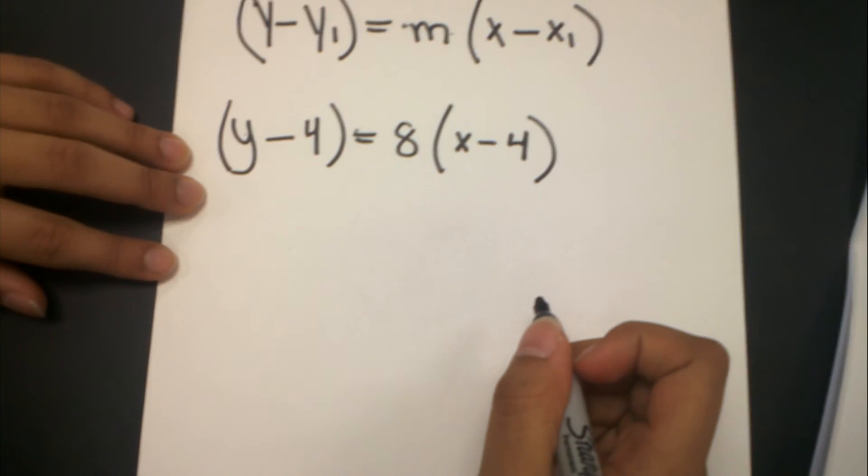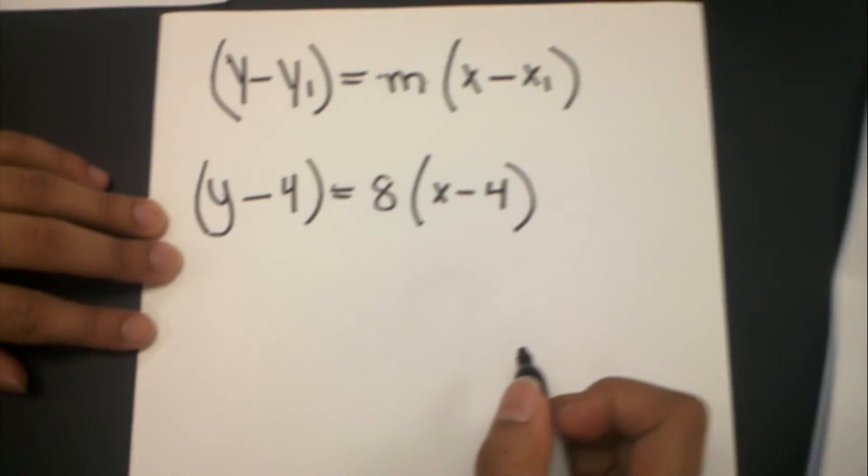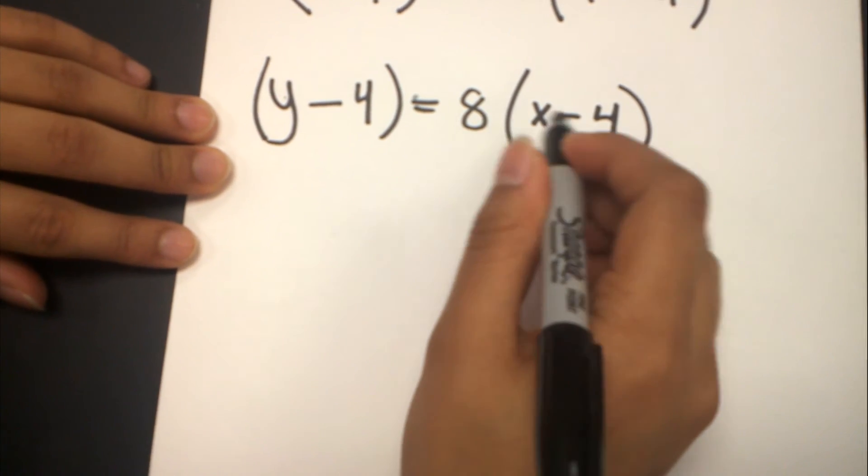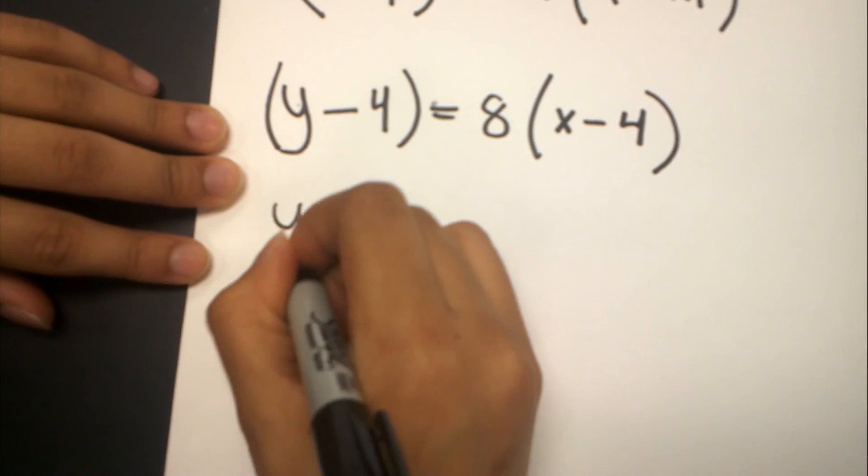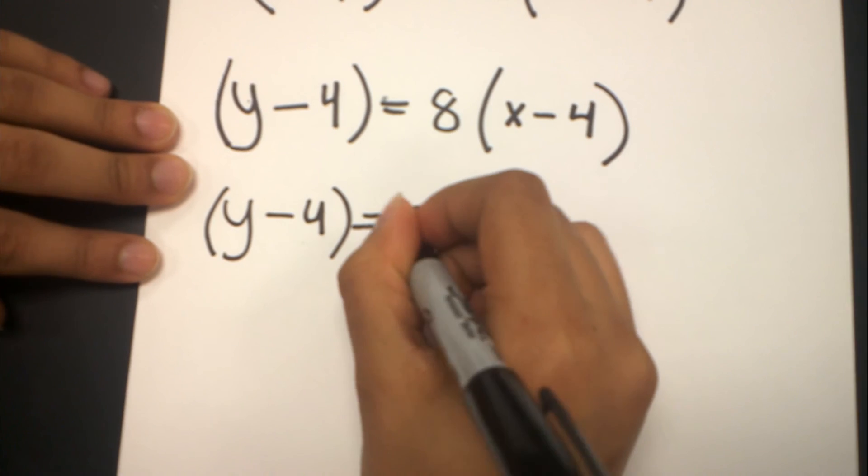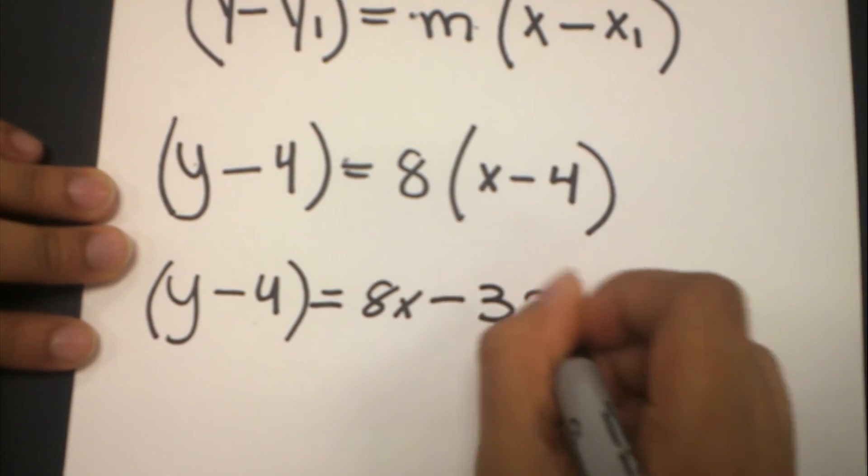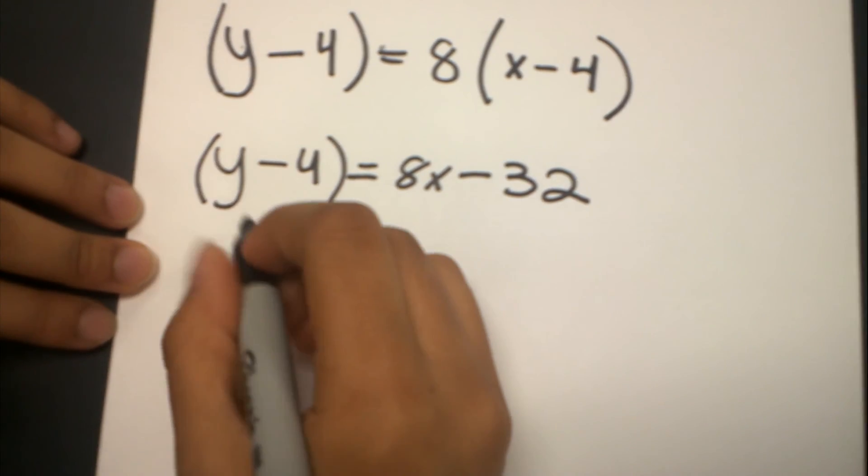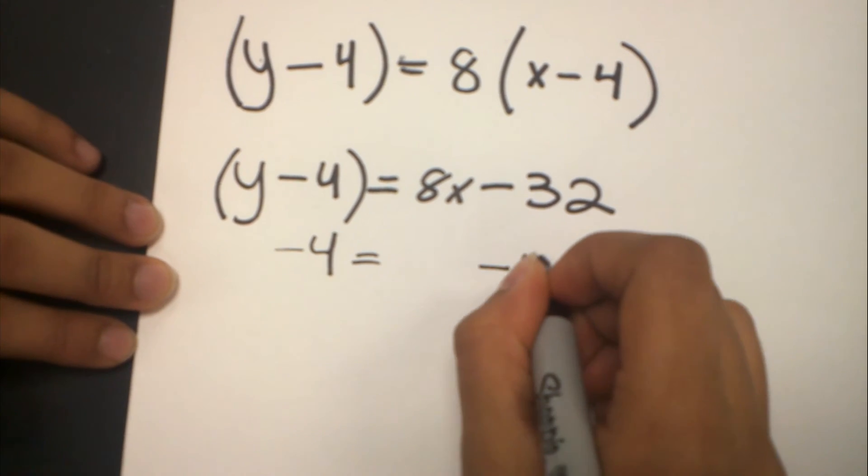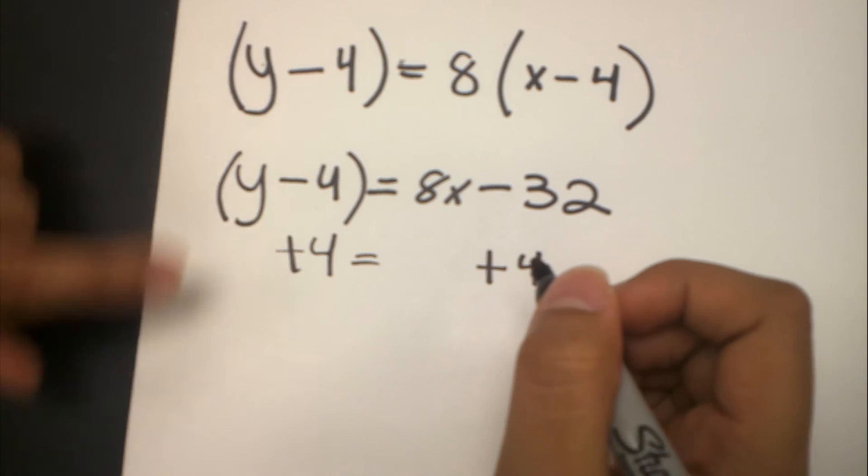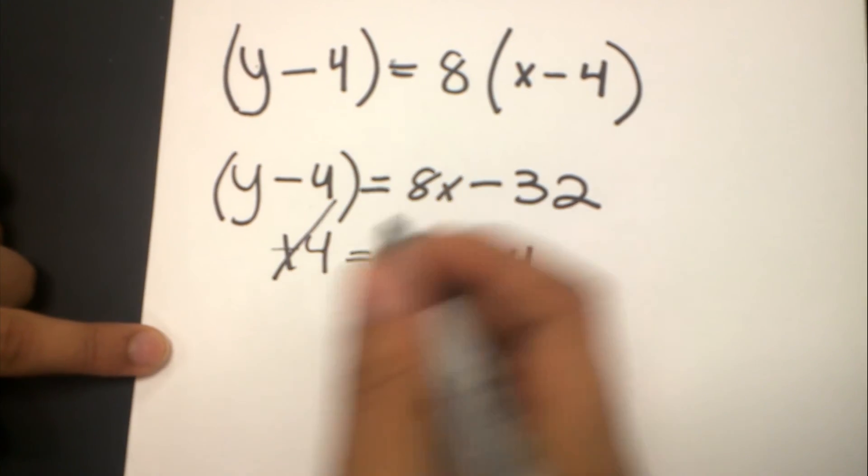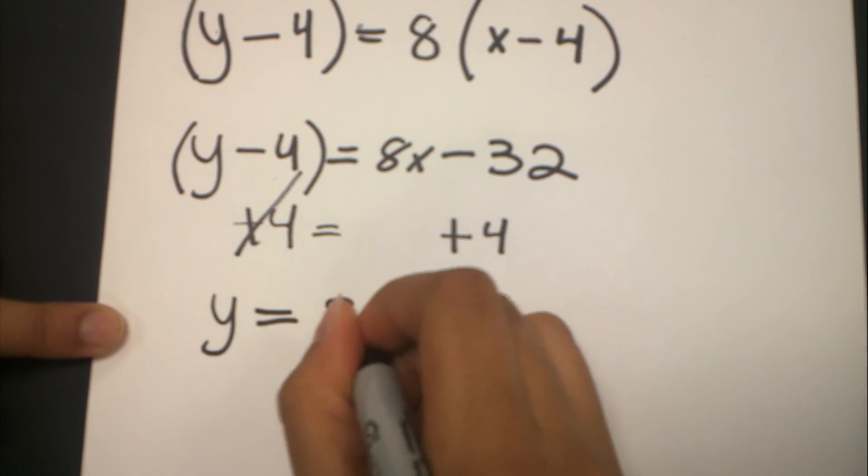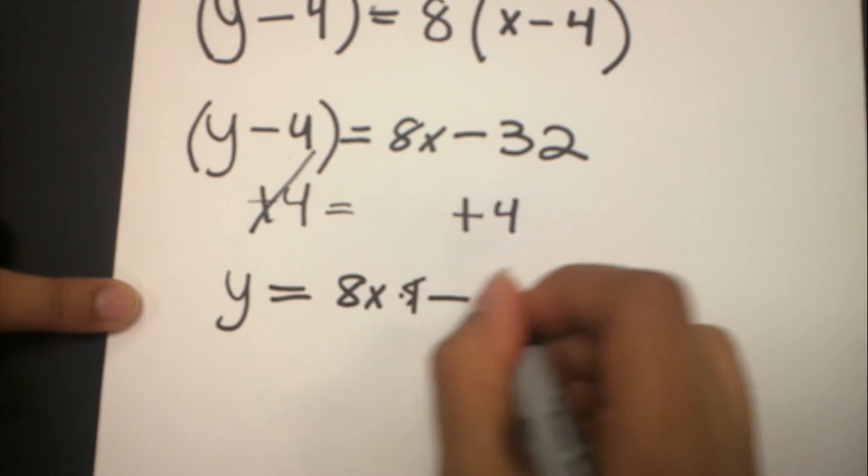Now we need to get Y by itself. So now we need to distribute 8 into this formula. Still, this stays the same: Y - 4 = 8X - 32. Now, we are going to add 4 to both sides to get rid of this 4. Plus 4, because this is negative, so you need to use the opposite. So this cancels out. It is going to be Y = -32 + 4 = -28, so this will be 8X - 28.